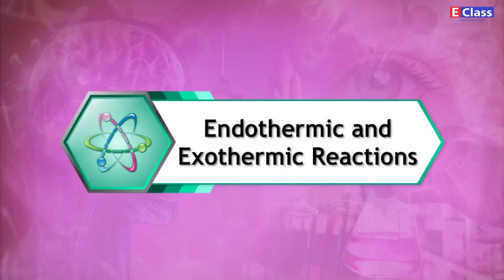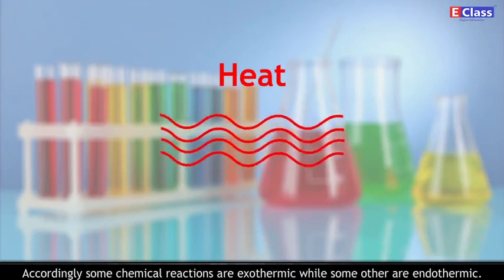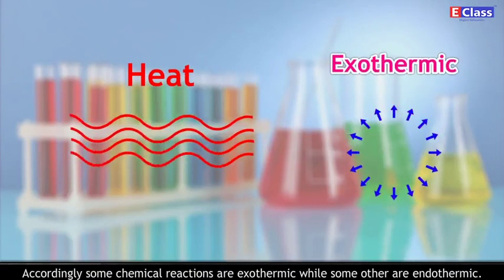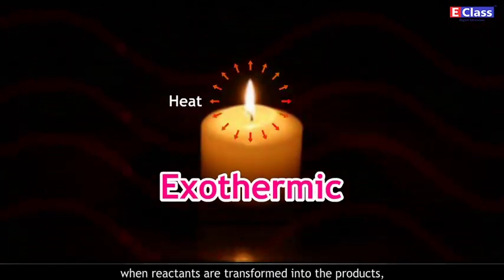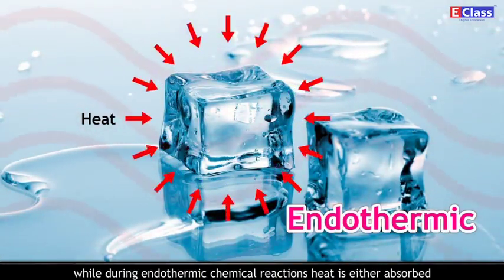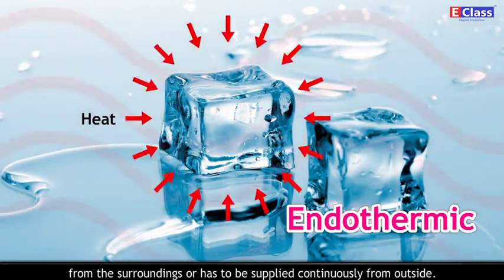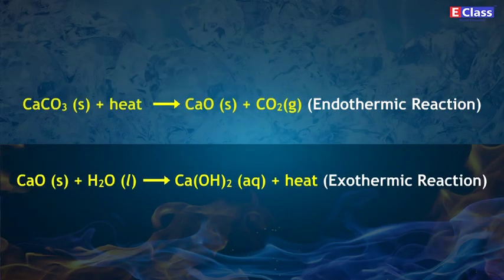Endothermic and Exothermic Reactions. There is an exchange of heat in chemical reactions as well. Accordingly, some chemical reactions are exothermic while some others are endothermic. During exothermic chemical reactions, heat is given away when reactants are transformed into products. During endothermic chemical reactions, heat is either absorbed from the surroundings or has to be supplied continuously from outside. For example: CaCO3(s) + heat → CaO(s) + CO2(g) — endothermic reaction. CaO(s) + H2O(l) → Ca(OH)2(aq) + heat — exothermic reaction.